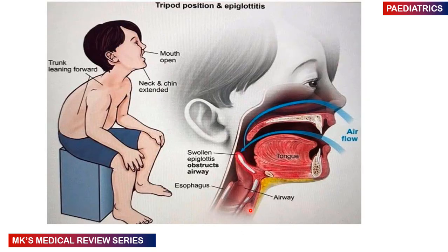Here is a picture of a child with epiglottitis. They are leaning forward, mouth open, chin and neck hyperextended. We can see that the epiglottis is swollen and obstructing the airway.